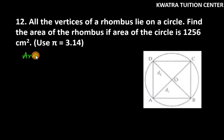So we are given the area of the circle. We have to find the area of the rhombus. Now, we need to find the diagonals. When the area of the circle is given, we will find the radius of the circle and we will know the diagonals.